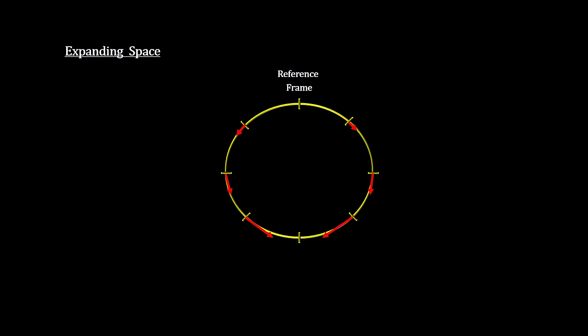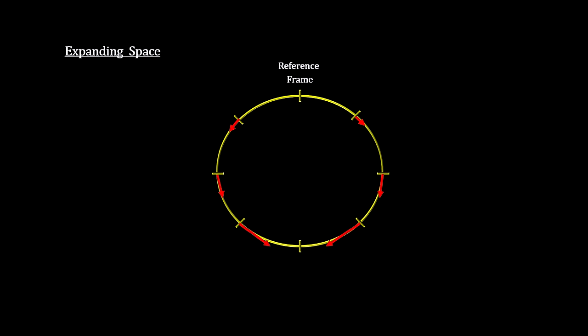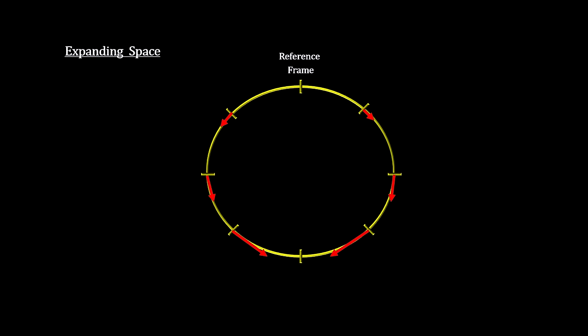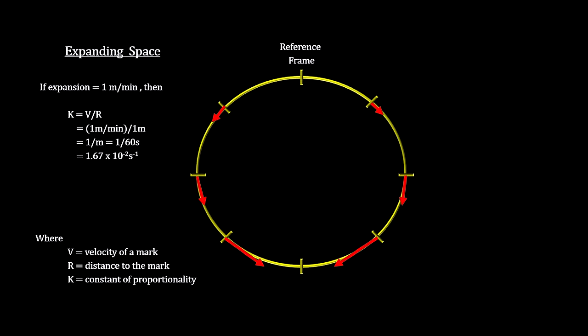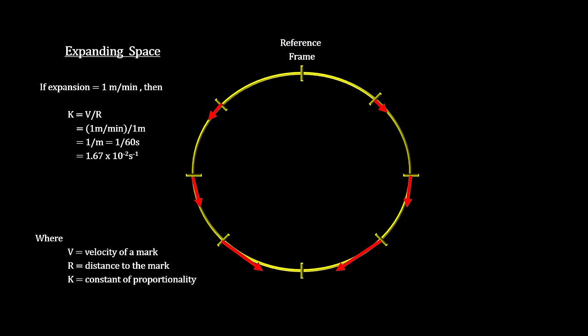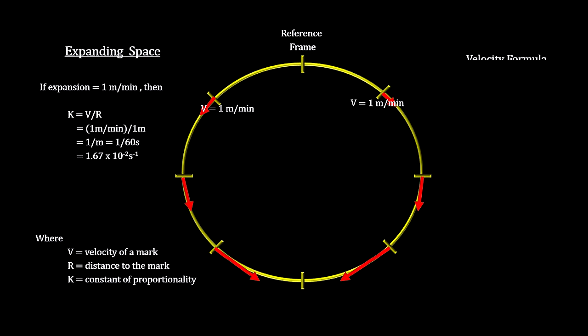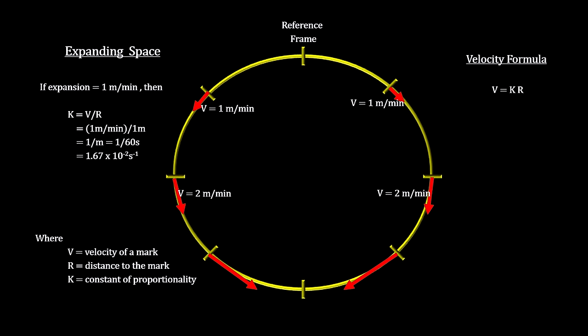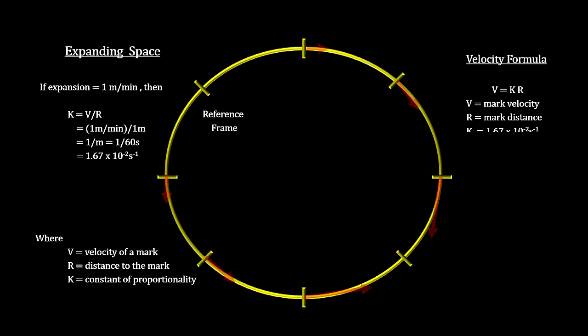But if the apparent motion is due to the amount of space expanding, we get a different picture. Here, the marks hold their position on the line, but the line grows. Let's say each meter on the line expands to two meters over the course of a minute. We see that the distance between adjacent marks goes up one meter, and their apparent velocity, as seen by each other, is one meter per minute. But more distant marks have increased their distance and velocity by more than that. And the further away any two marks are, the more their distance and velocity have increased. And most importantly, this will be the same no matter which mark is used for the reference frame.